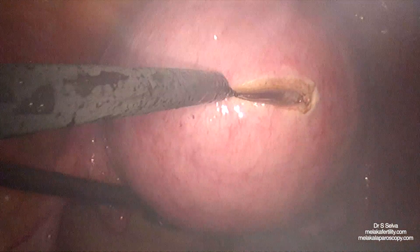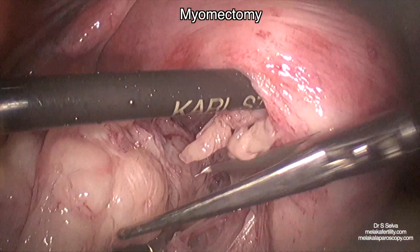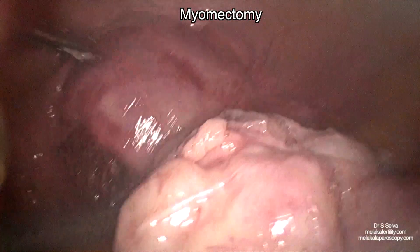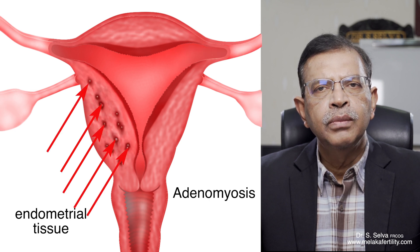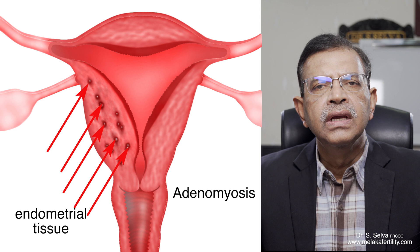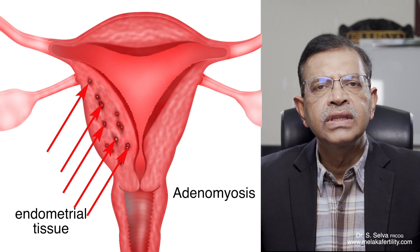It is also easy to remove a fibroid from the uterus during surgery, and the surgery is called myomectomy. Adenomyosis occurs when the endometrium is found in the myometrium of the uterus, and the endometrial tissue is spread in the myometrial layer and causes enlargement of the uterus. The endometrial tissue is not well defined as in a fibroid and can be found all over the myometrium.